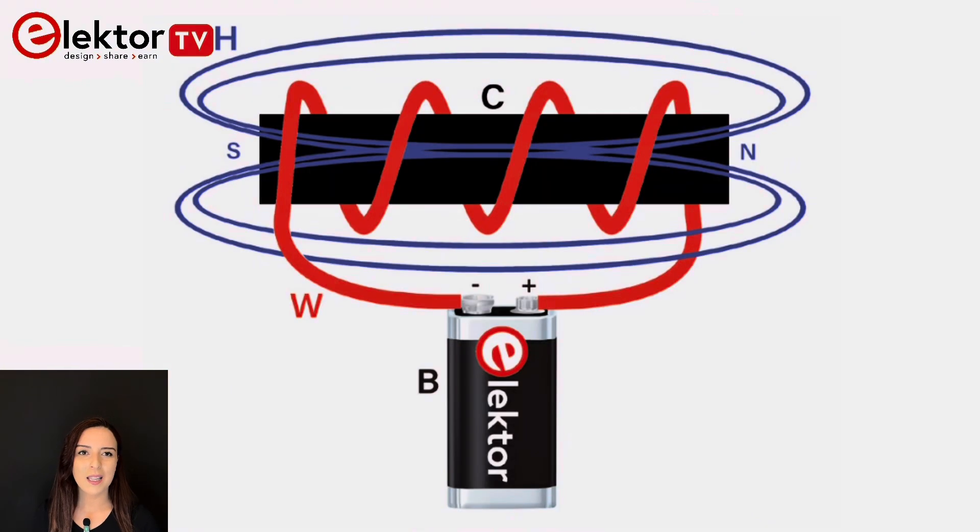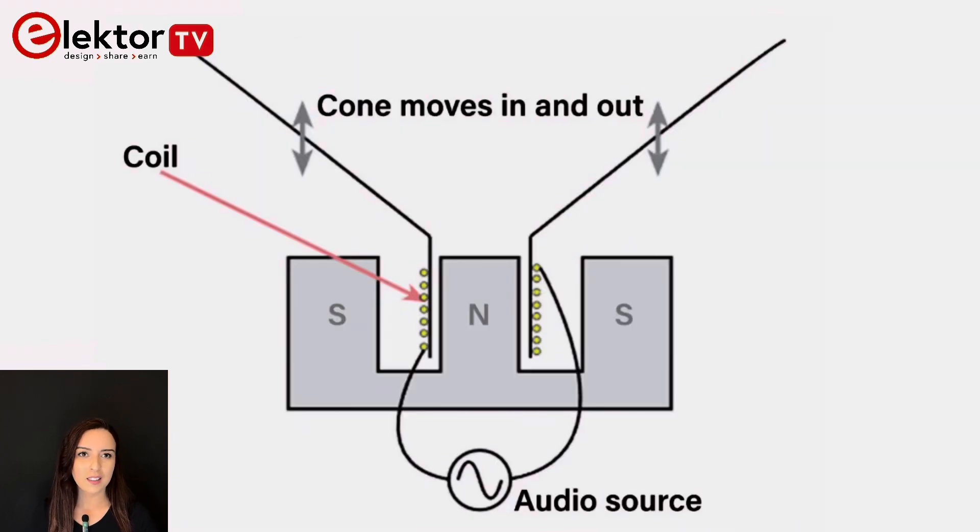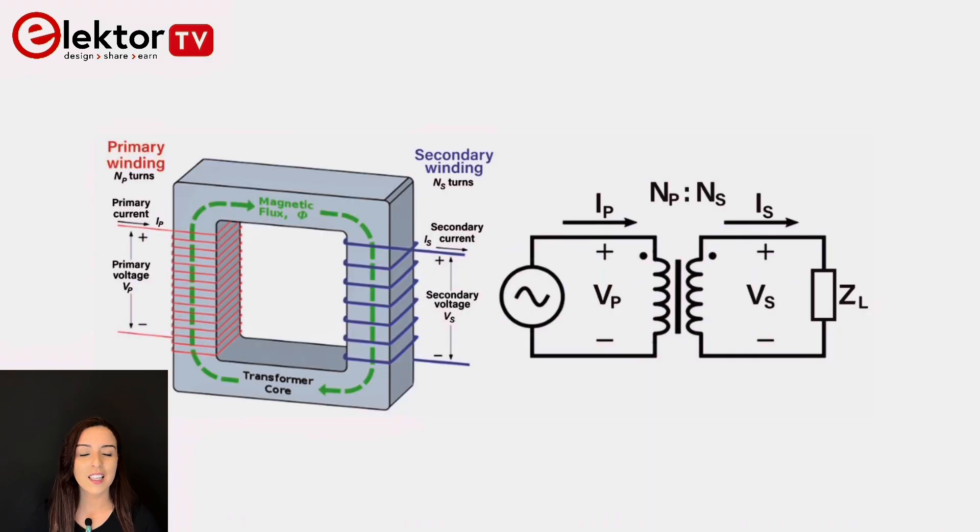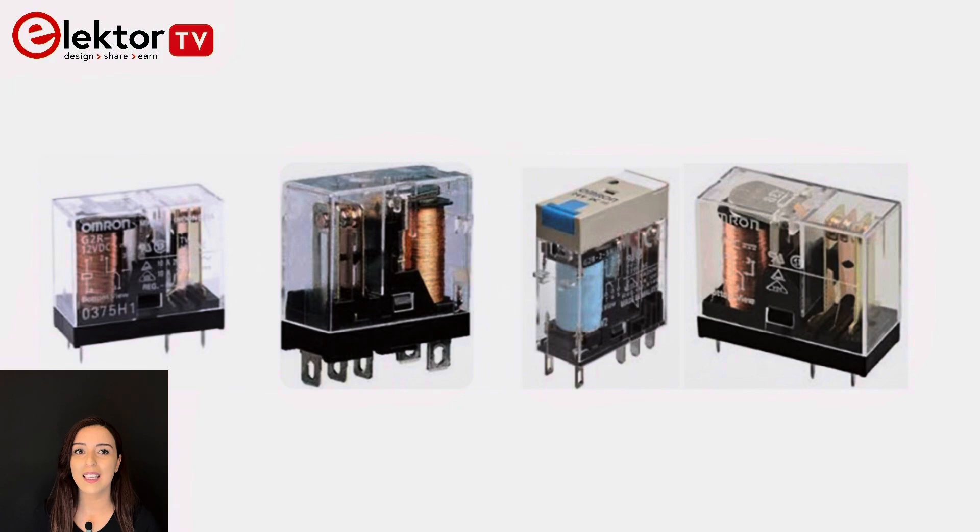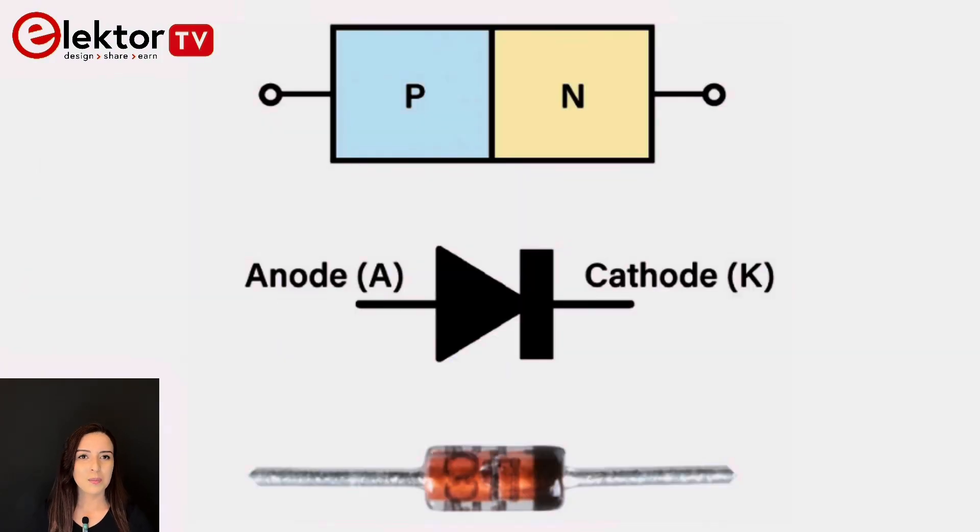Electricity and magnetics are very closely linked. Magnets are used to create electricity and electricity is used to create magnets. In chapter three we'll look at the use of magnetism in electronics.